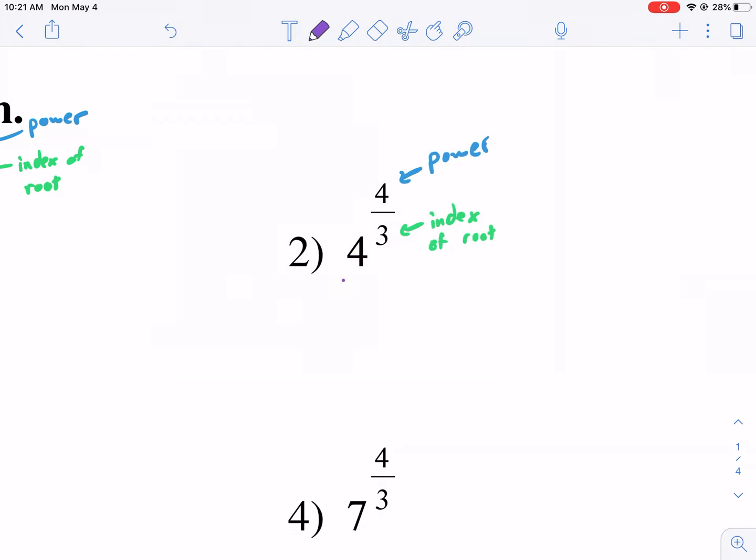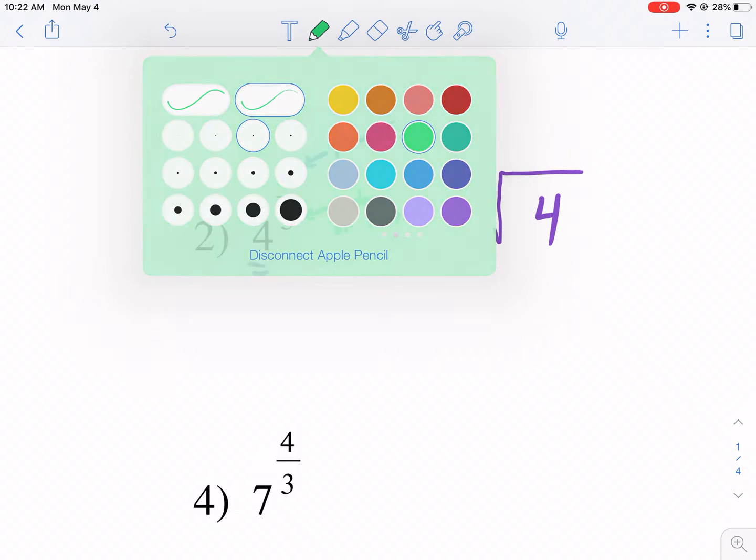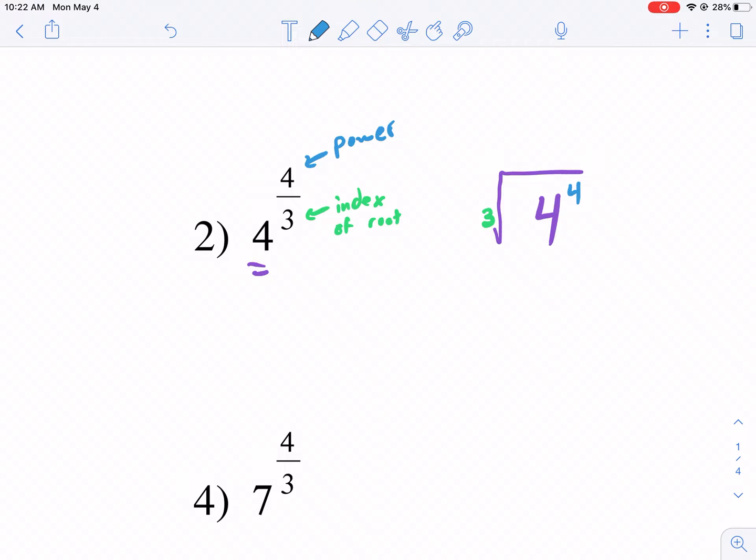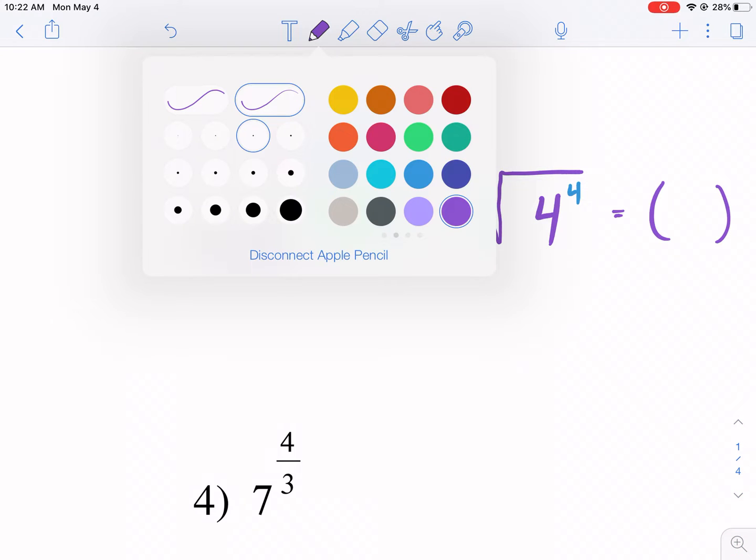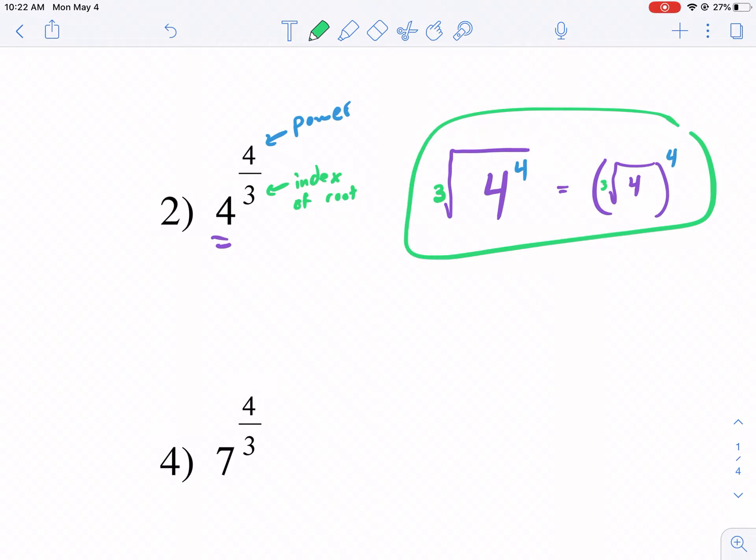Keep in mind, we have to keep the base the same. So our base is going to be four. We're going to have a root. What is the index of that root? It's going to be three. And then we can raise this to the fourth power. Now, you can put it inside the parentheses like that, or like I showed earlier, you can make parentheses, raise the whole thing to the fourth power, and then take the cube root of four on the inside. It's up to you. In order of operations, it really doesn't matter because it's all exponents here. So both of these are acceptable answers. I prefer this one because it looks a little bit more neat.